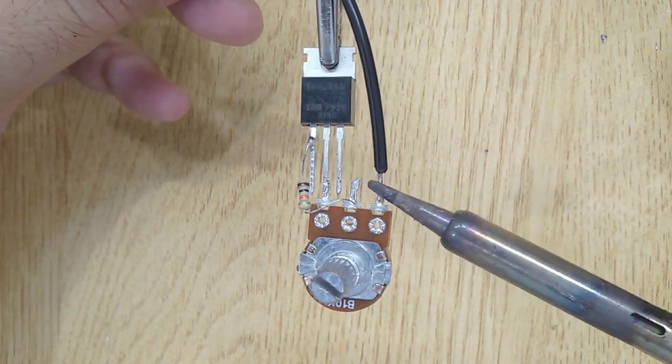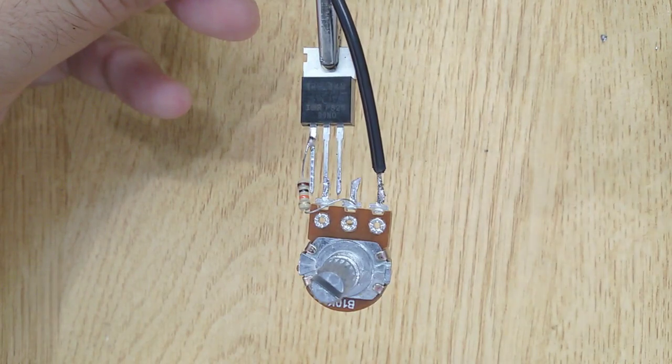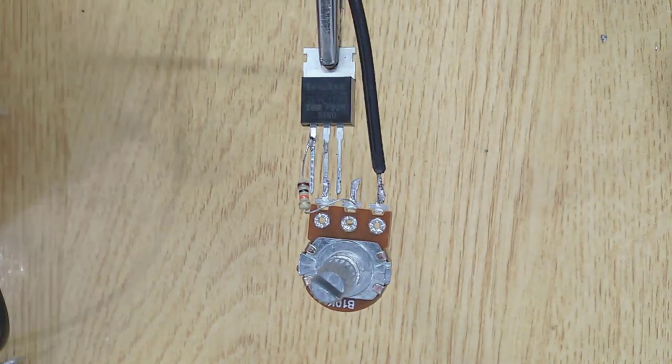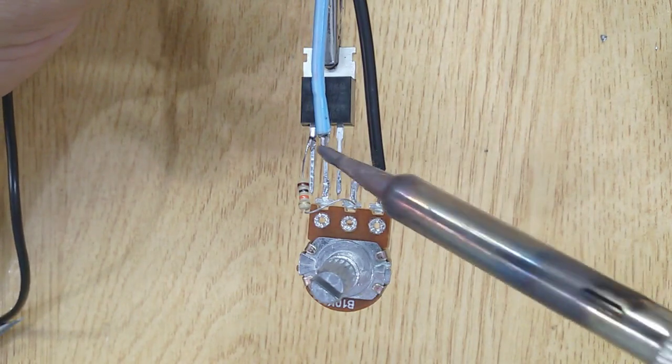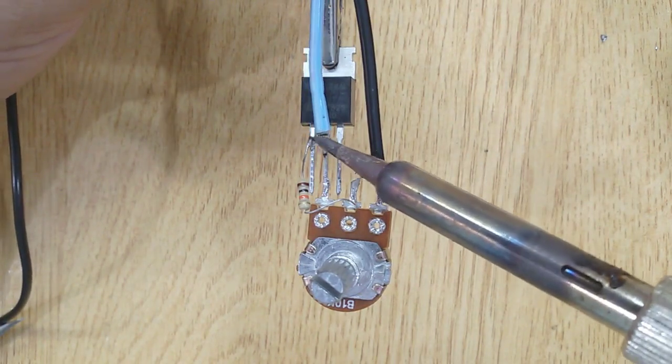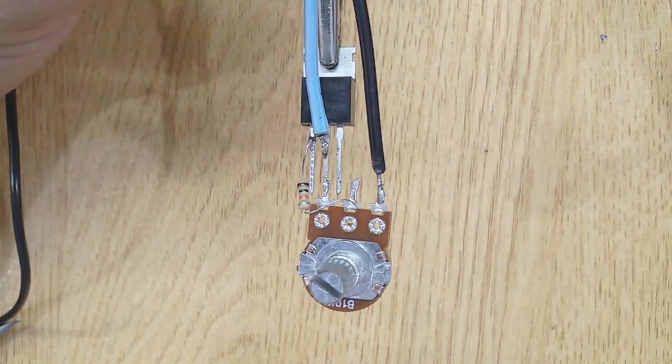Now solder the negative wire of power supply with the third pin of variable resistor and the positive wire of power supply with the drain pin of MOSFET.